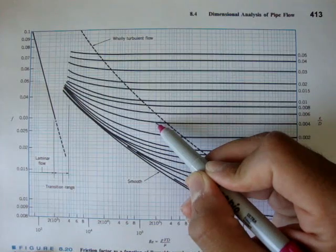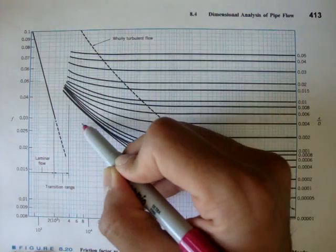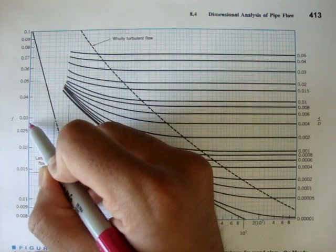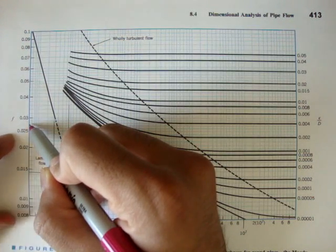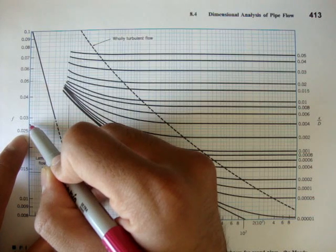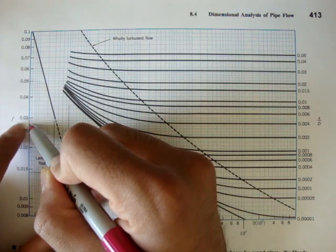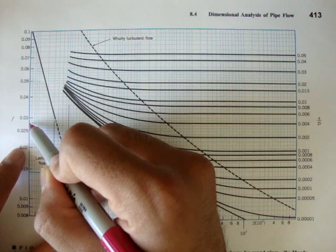Right? And if you bring that over here, you can figure out that the Reynolds number, I mean the frictional factor, I'm sorry, the frictional factor is between 0.025 and 0.03. Okay?